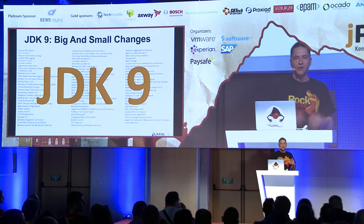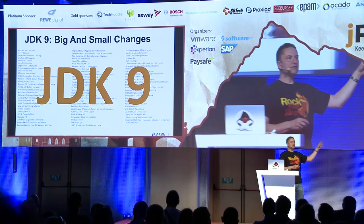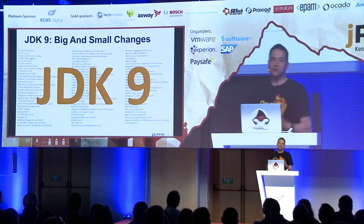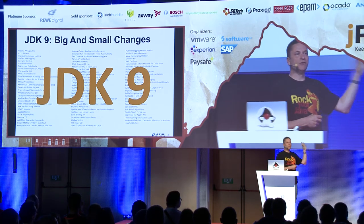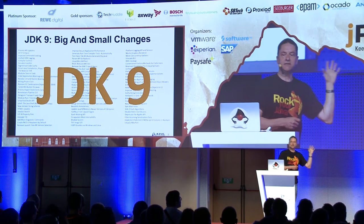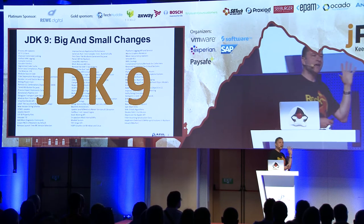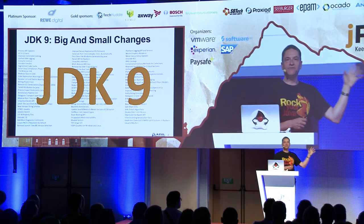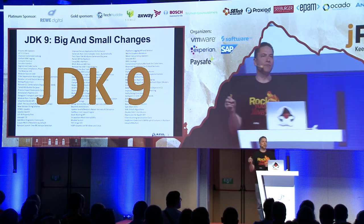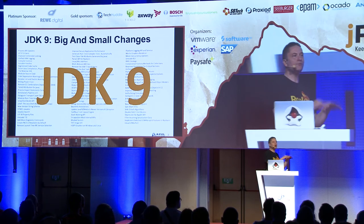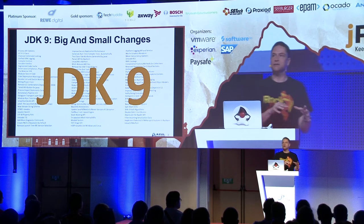The first thing is to look at JDK 9. I borrowed this slide from Oracle — I used to work for them so I feel it's fair. This is a complete list of everything that went into JDK 9, and if you count them all up there are 85 new features. Many of them are quite small and at the JVM level, so they're not typically going to affect most developers.